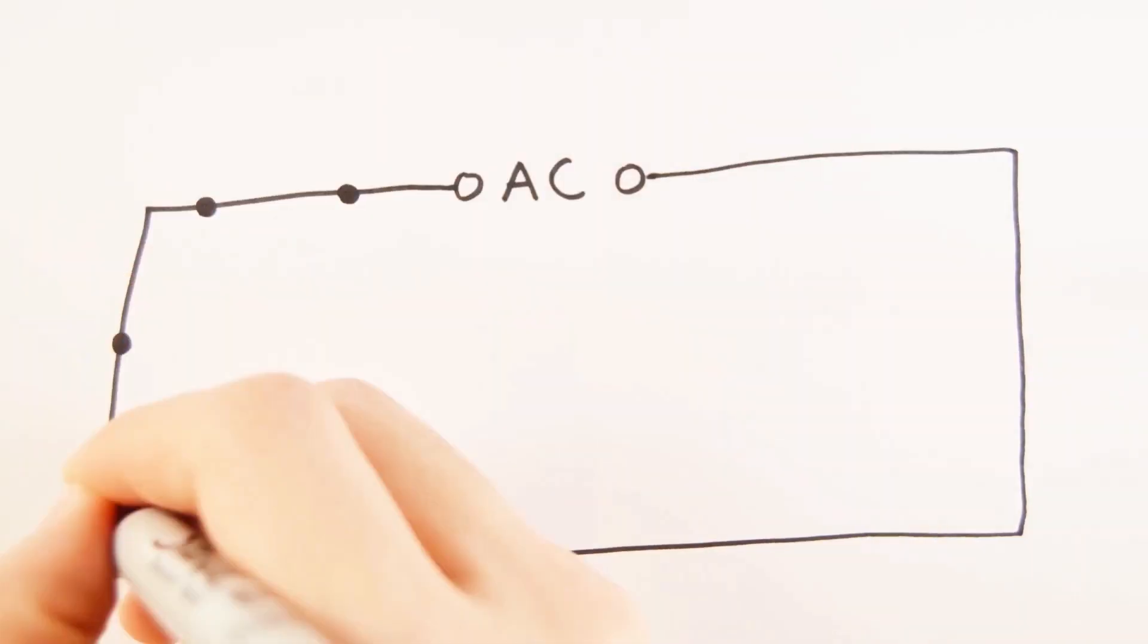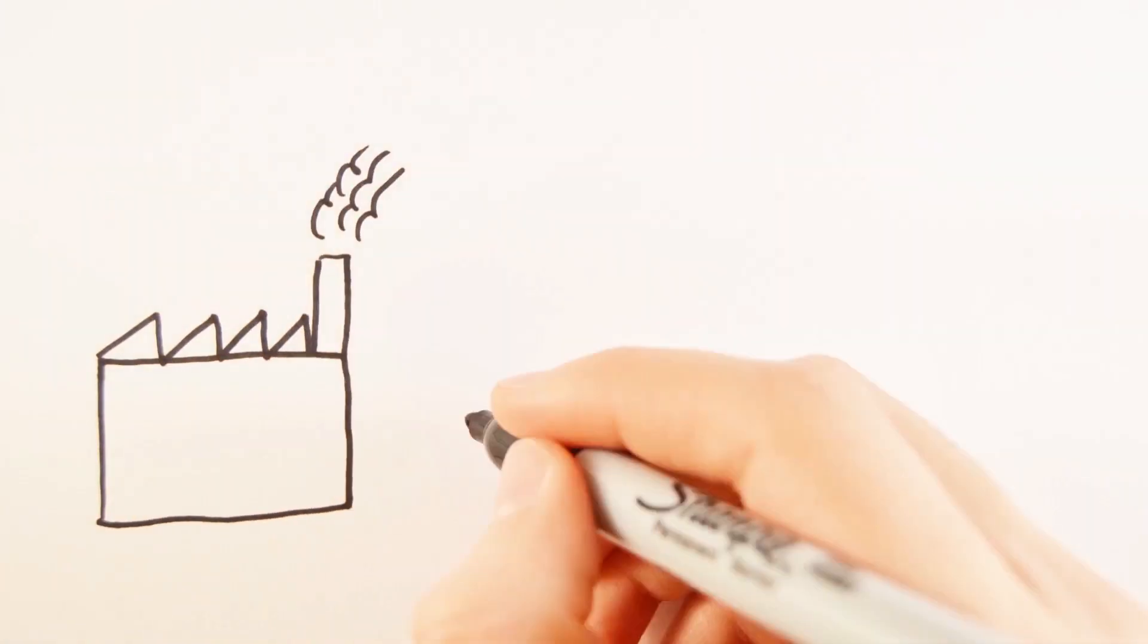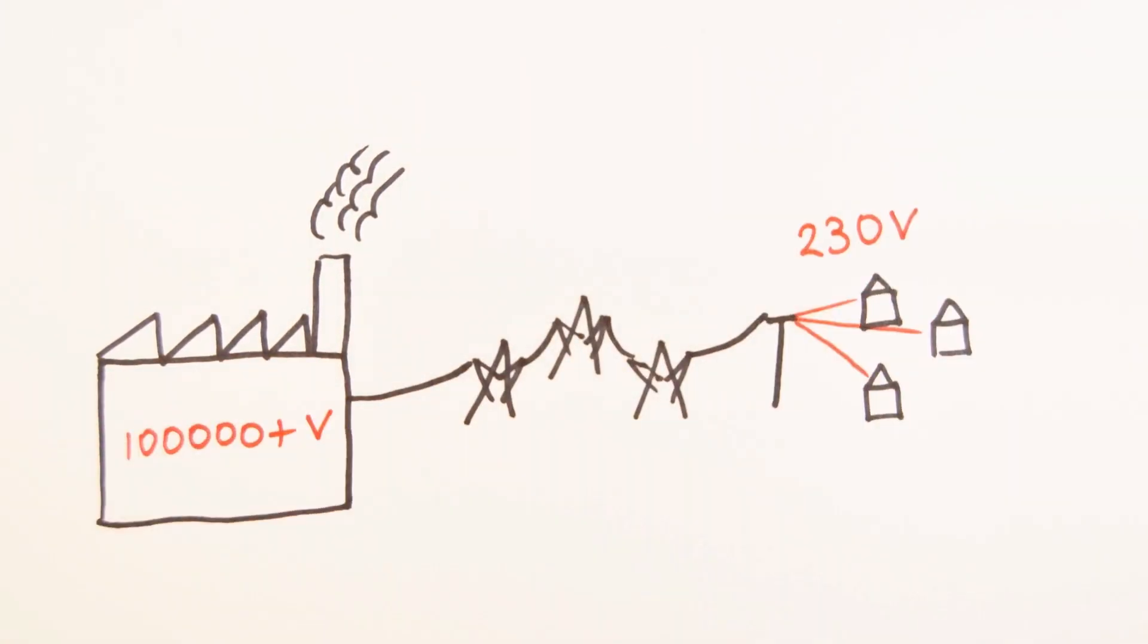If the current is constantly changing direction, it's called an alternating current. Mains electricity is AC supply, with the UK mains supply being about 230 volts.